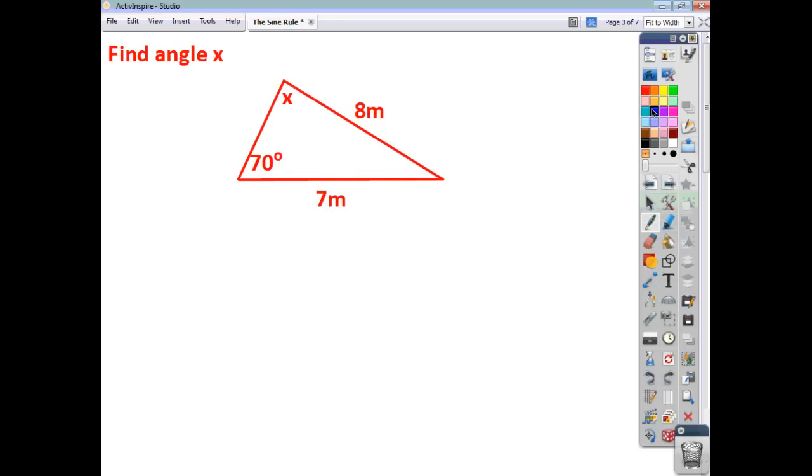So, let's have a look at a few examples. So, here's your first question. There's your pair of opposites. There's your pair of opposites. So, we start off just by saying that 7 over sine x is equal to 8 over sine 70.